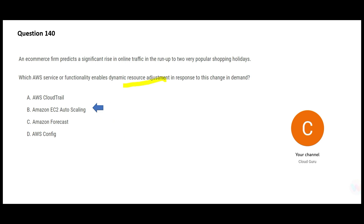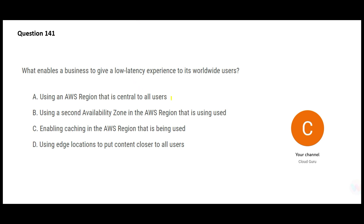Next question: you need to provide a low-latency experience — for example as a Netflix user you want no buffering at the click of a button, and worldwide users should be able to do that. Option A says use a region central to all users — but there cannot be any region central to all users, since some are in Africa, Europe, Asia, America. Option A is wrong. Option B says use a second availability zone — but using multiple AZs is not going to help with low latency.